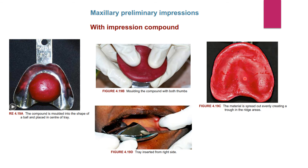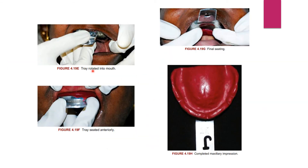The material spreads out evenly, creating a trough in the ridge areas. The tray is rotated into the mouth, seated anteriorly, then finally seated completely. The completed maxillary impression is then evaluated for extension, reproduction of anatomic landmarks, tray exposure, and whether the rugae and midline coincide. The impression can be refined if needed and should be poured within an hour.